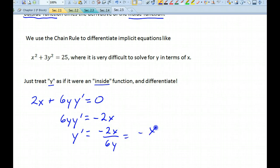That reduces to negative x over 3y. So when you do implicit differentiation, oftentimes you're going to have both an x and a y in your answer. Let's do a harder one.